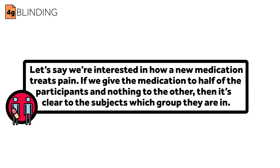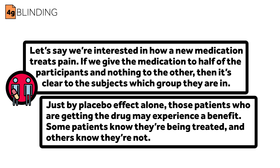Let's start with a completely unblinded trial and work backwards in order to understand how this all works. Let's say that we're interested in how a new medication treats pain. If we give the medication to half the participants and nothing to the other, then it's clear to the subjects which group they're in. Some patients know they're being treated and others know they're not — there's no blinding at all.